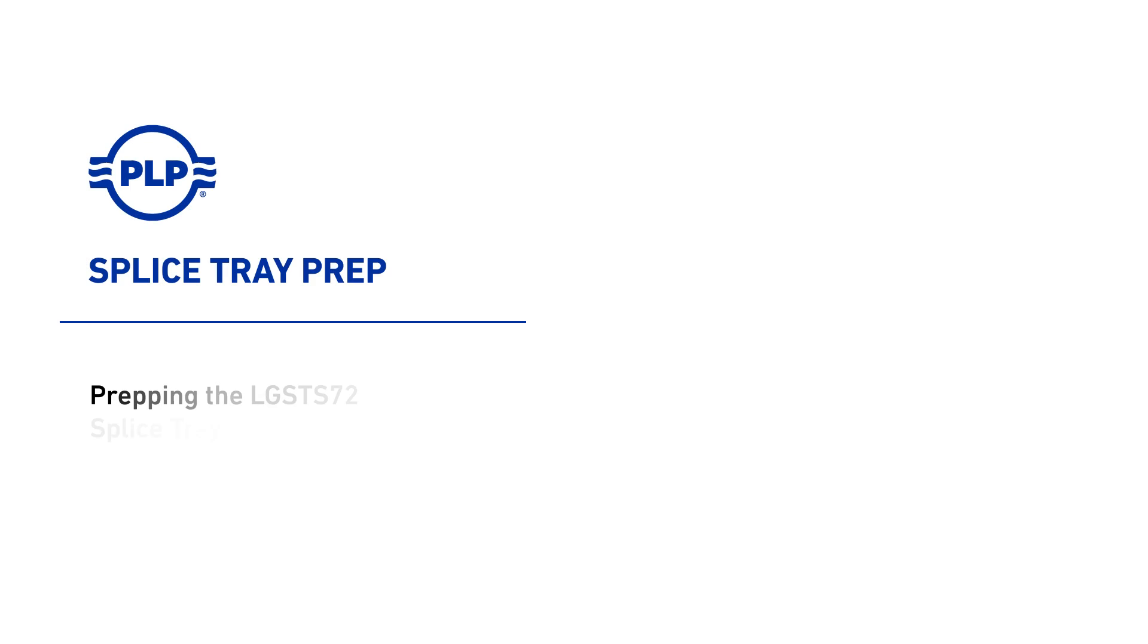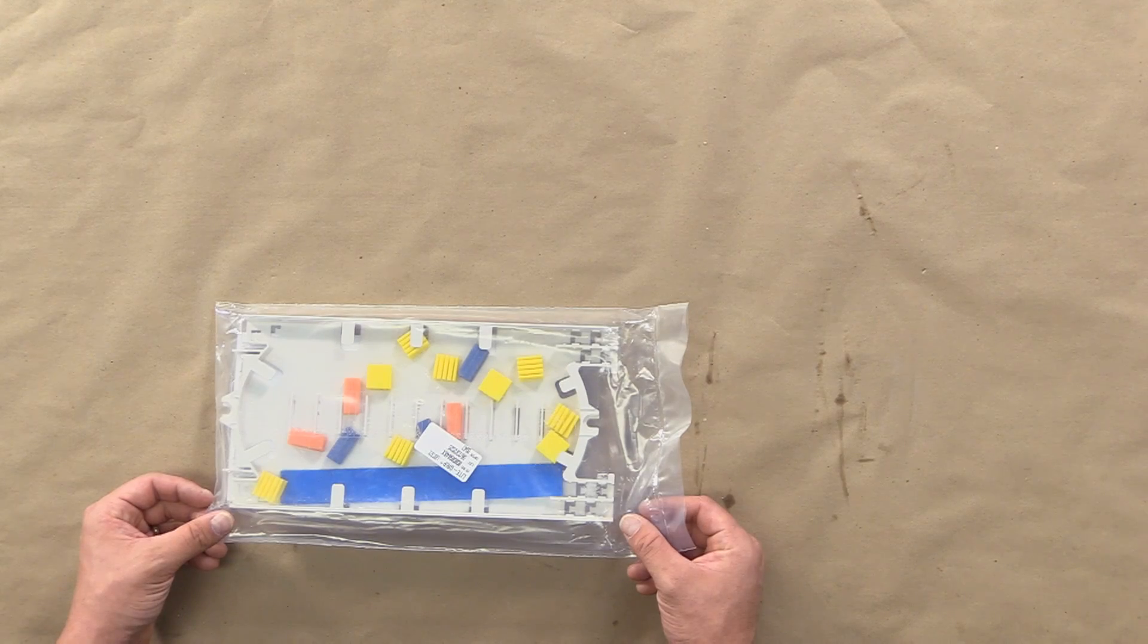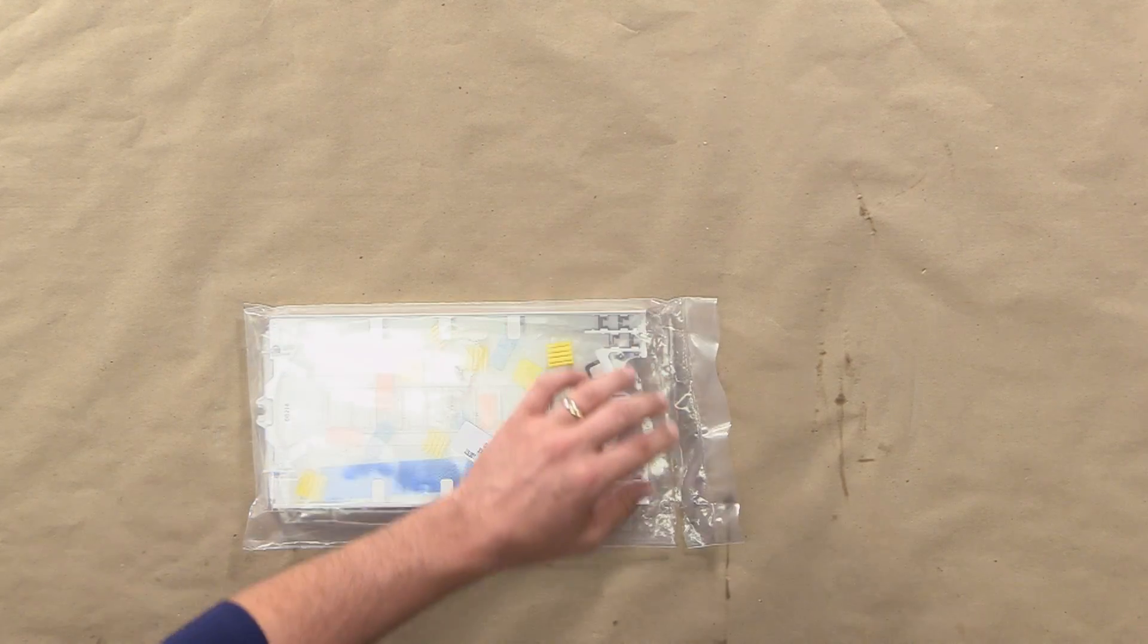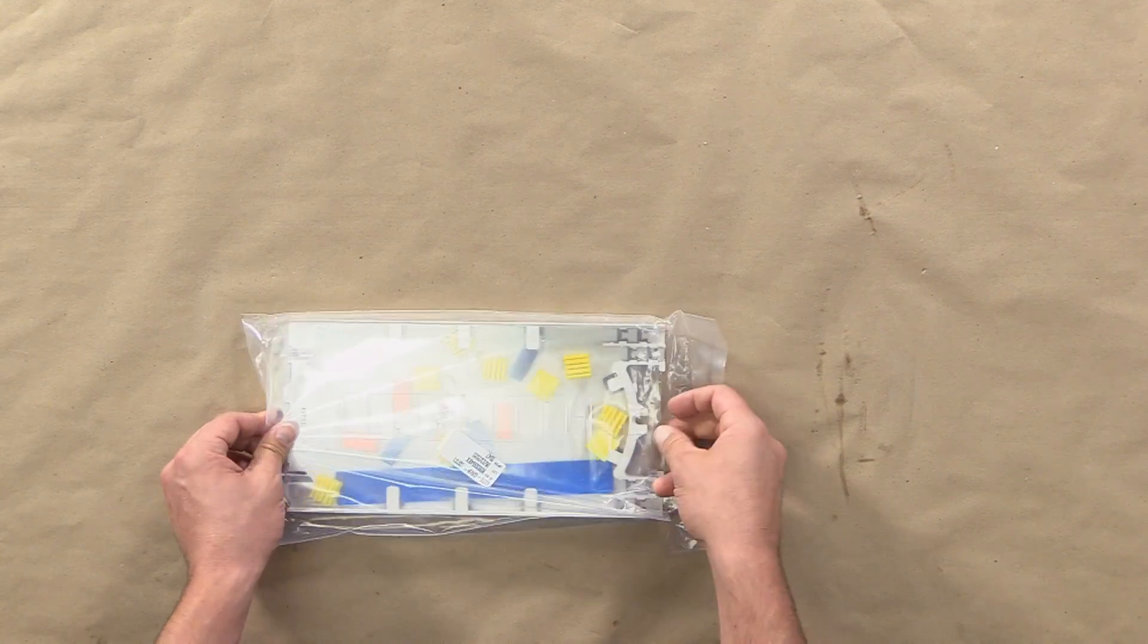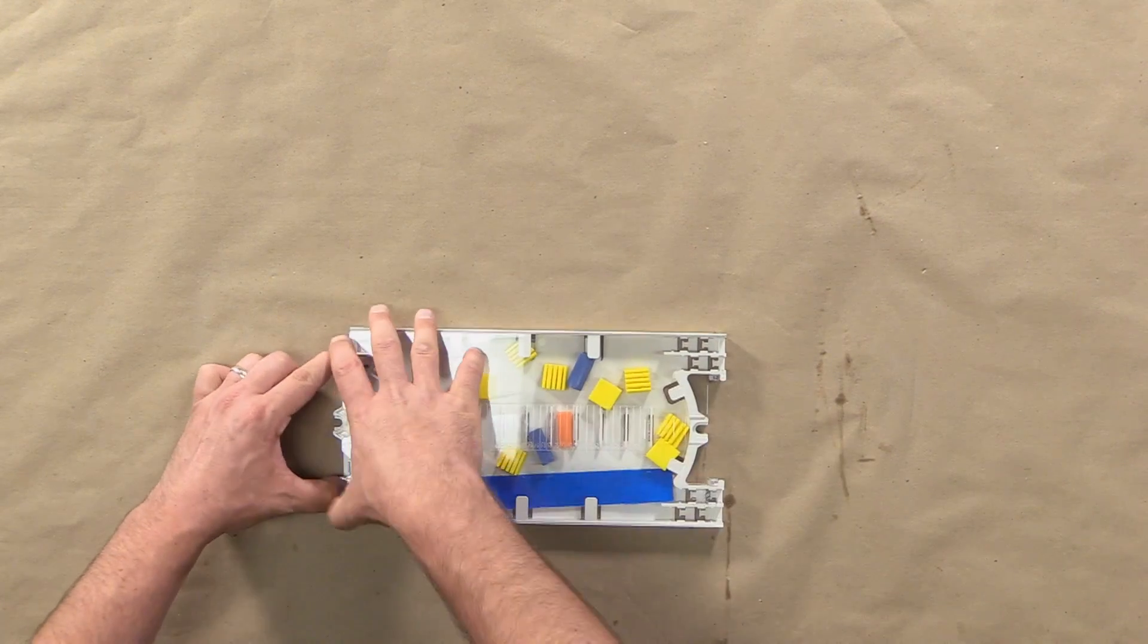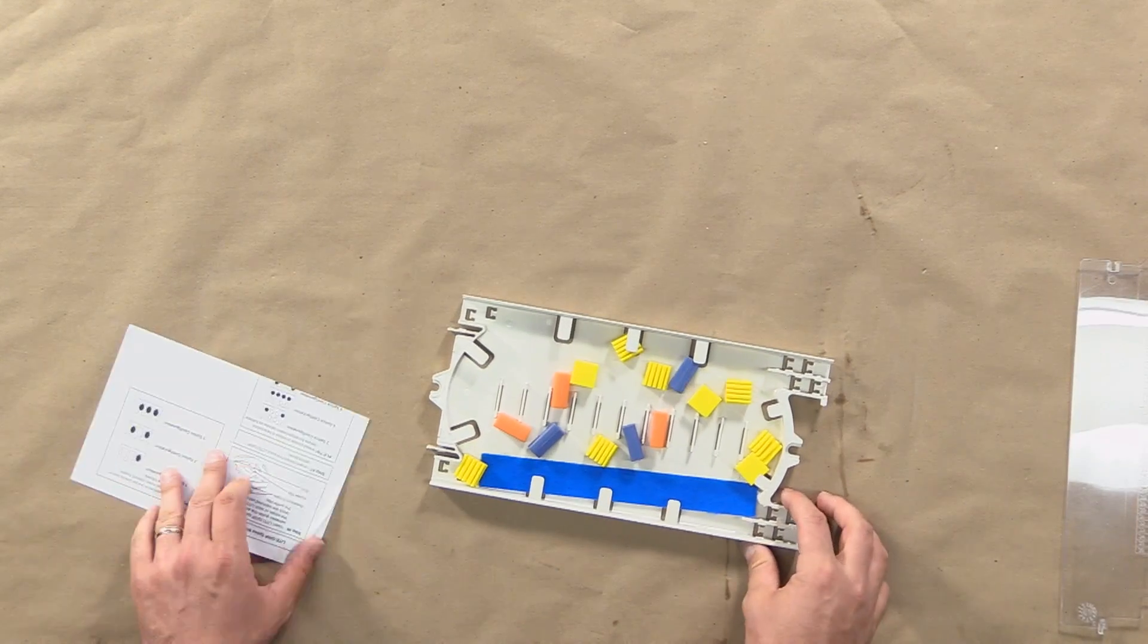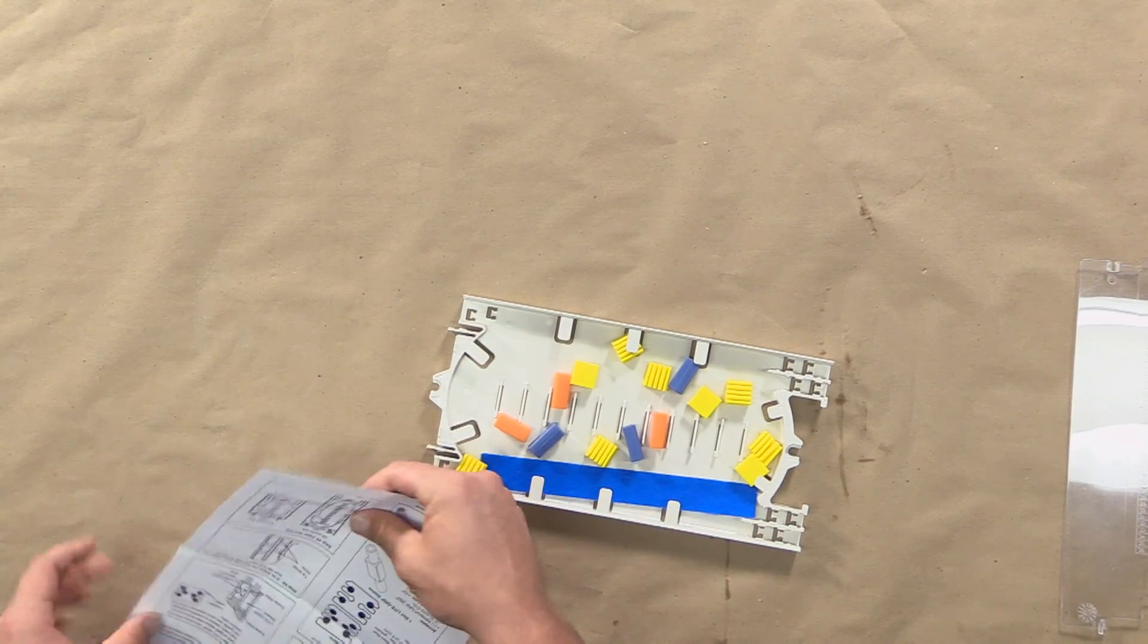Prepping the LG STS-72 splice tray. Remove tray from packaging. Remove the clear cover. Each tray comes with an application procedure that shows proper use and routing recommendations.